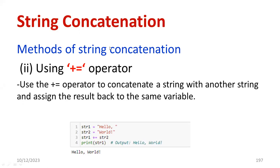Now we can see using the plus-equal-to operator. Refer to the program — you type the two strings, then use the operator str1 plus-equal-to str2. Then you print str1, and the output will be 'hello world'. This is another method of string concatenation using the plus-equal-to operator.